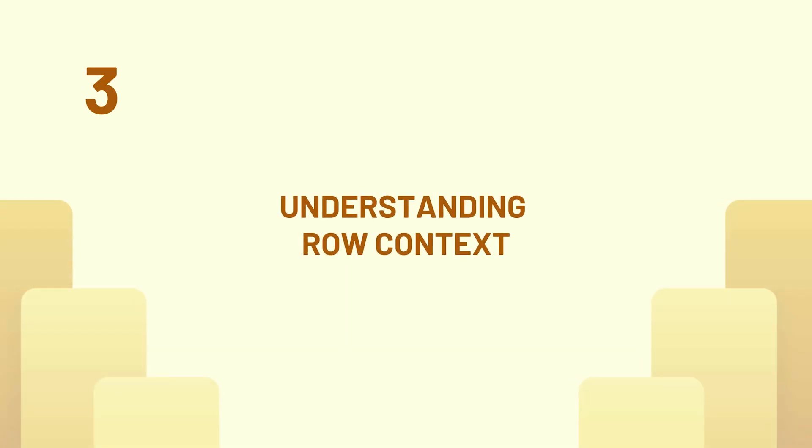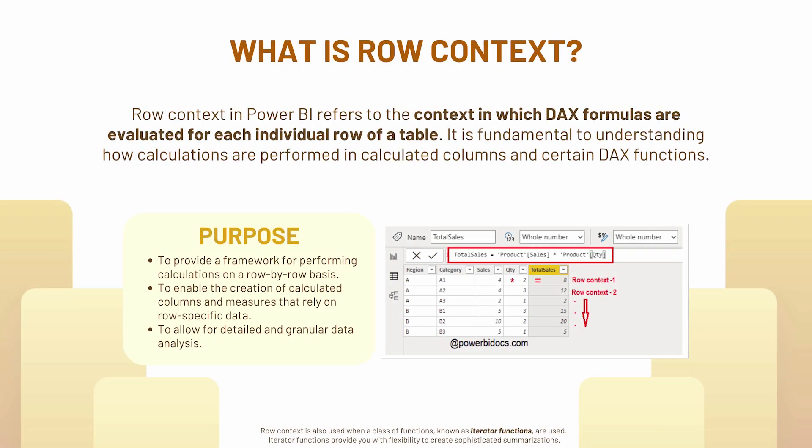Now let's try to understand the row context. First of all, what is a row context? As the name says, we are talking about how calculations happen row by row. In the screenshot on your screen you can see that if I am multiplying sales by quantity I am going to get my total sales. If you are writing your DAX that sales multiplies by product in your calculated column, you would see it happens row by row for each and every one — you are not just going to get one output, it's happening for individual rows. That is your row context.